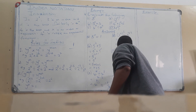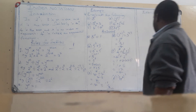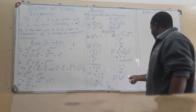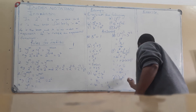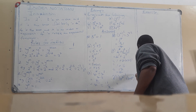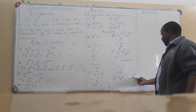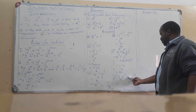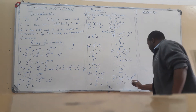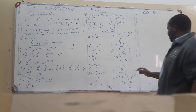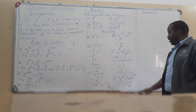For example f, we have 3 times x to the power 0, all to the power 3. X to the power 0 is 1, so this becomes 3 times 1, all to the power 3, which is 3 to the power 3. Three to the power 3 is 27. Alternatively, you can distribute the power and still arrive at 27.